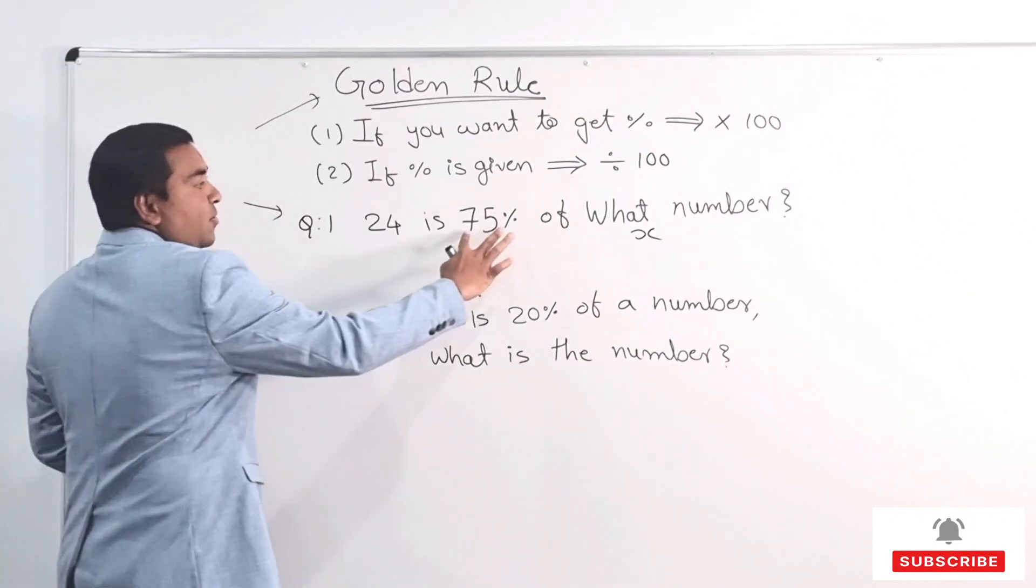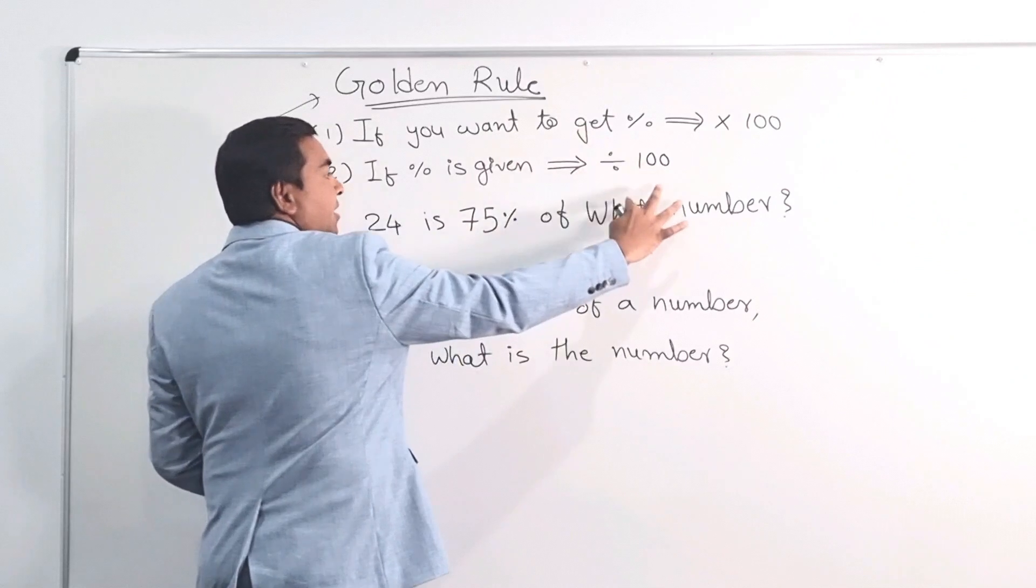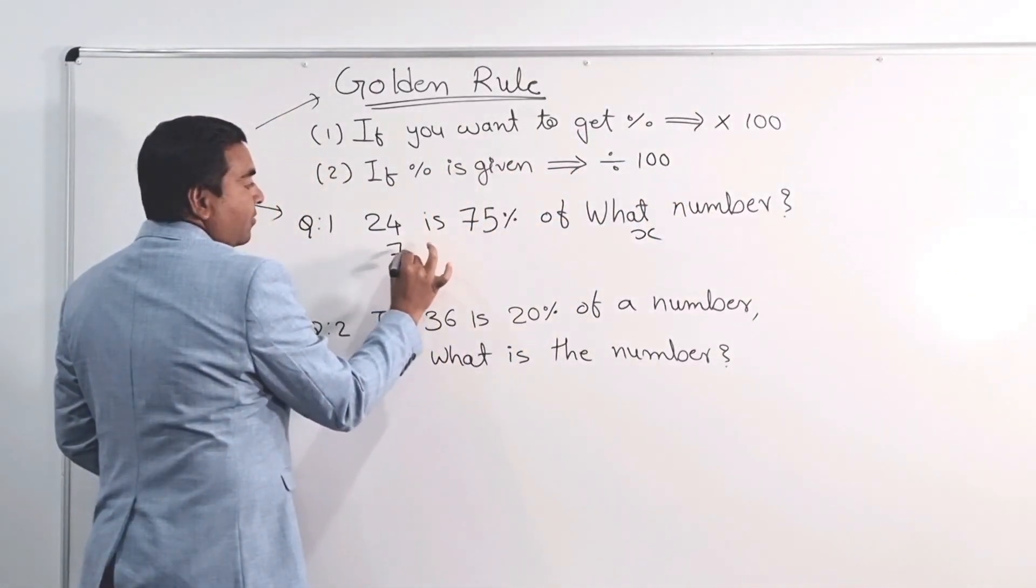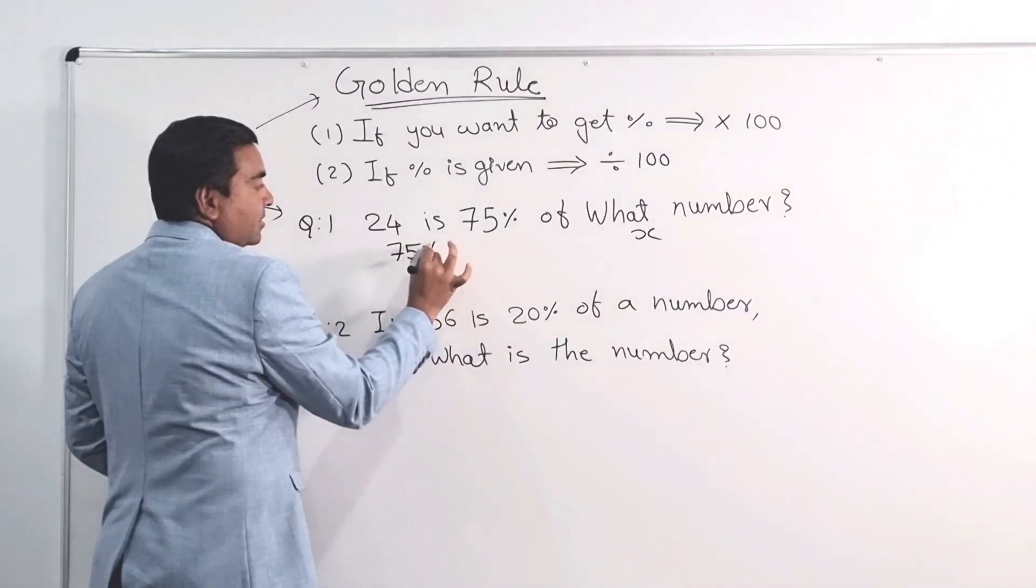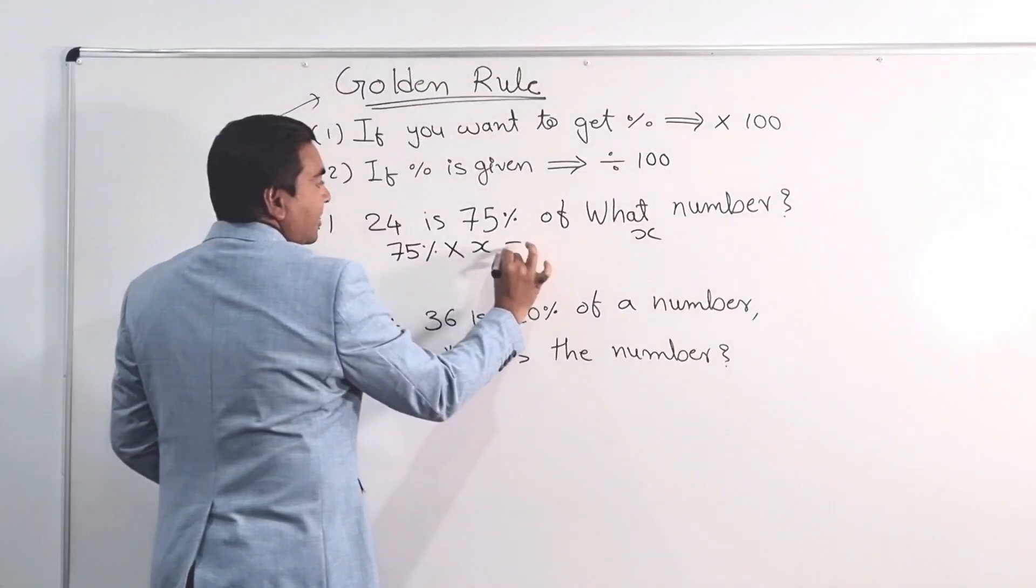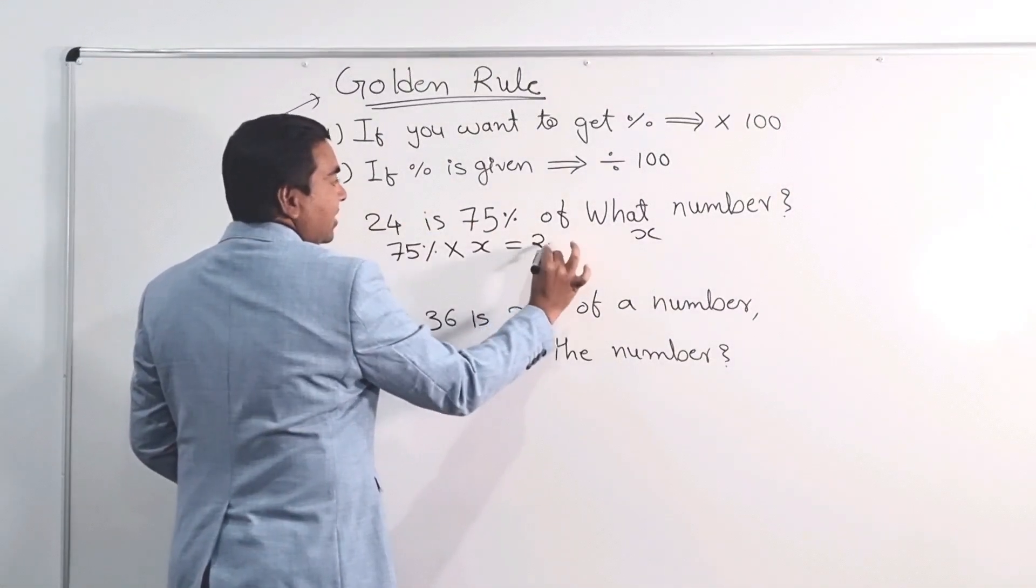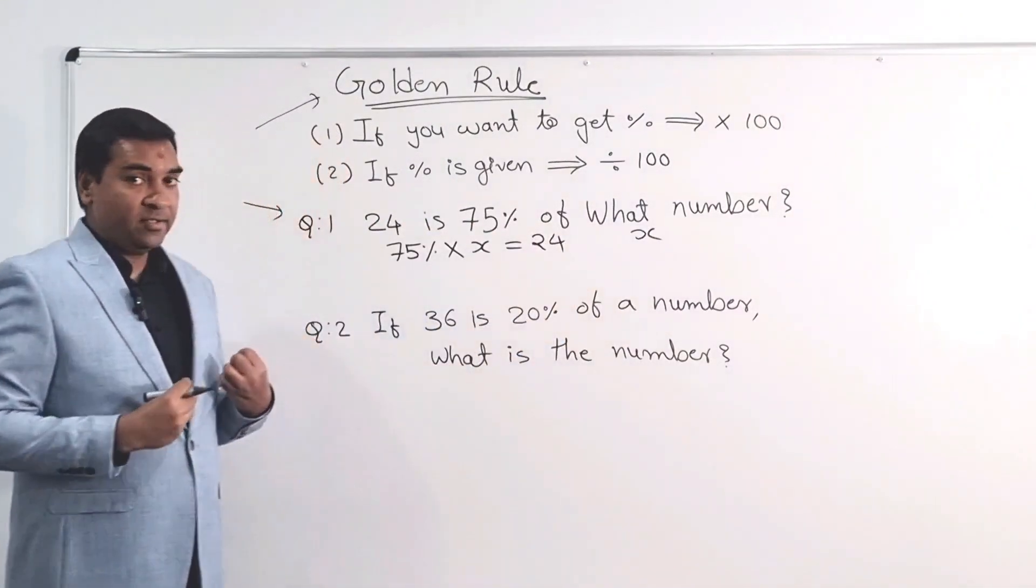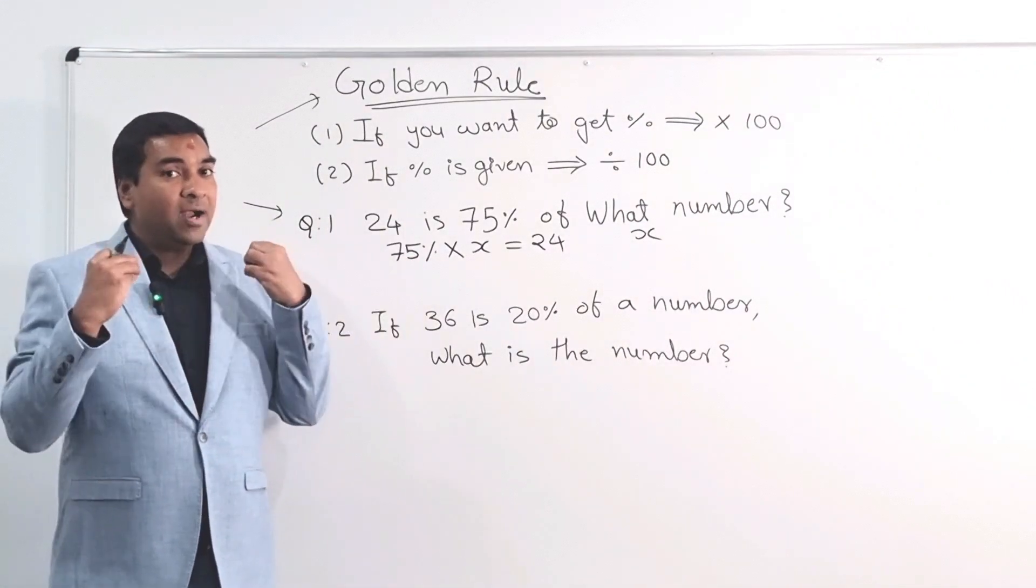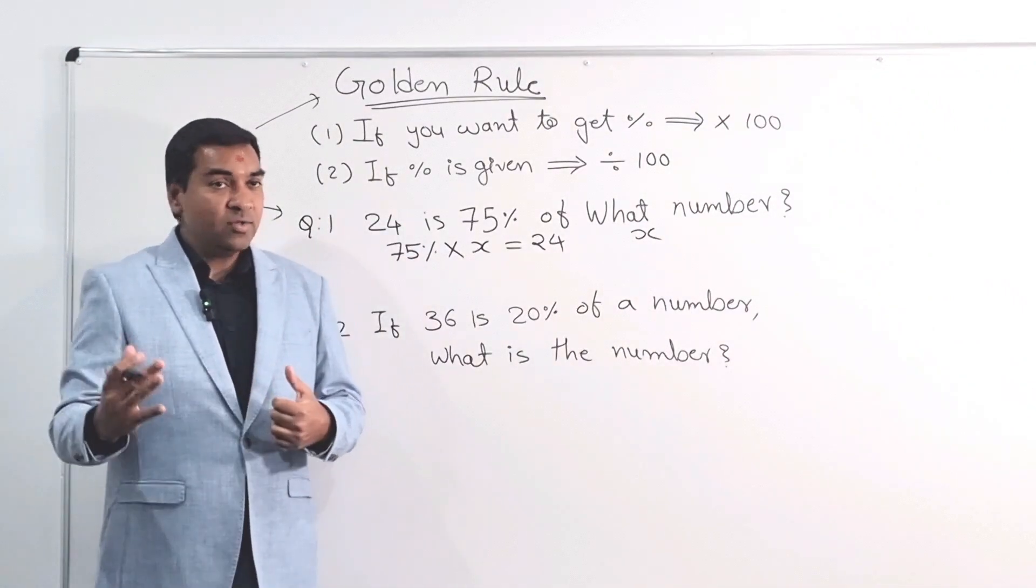Now, 75% of that number is 24. So I can write down 75% of that number which is X. So 75% times X which is equal to 24. Take your time guys because it's very very important you understand the concept. Then doing is not very hard.